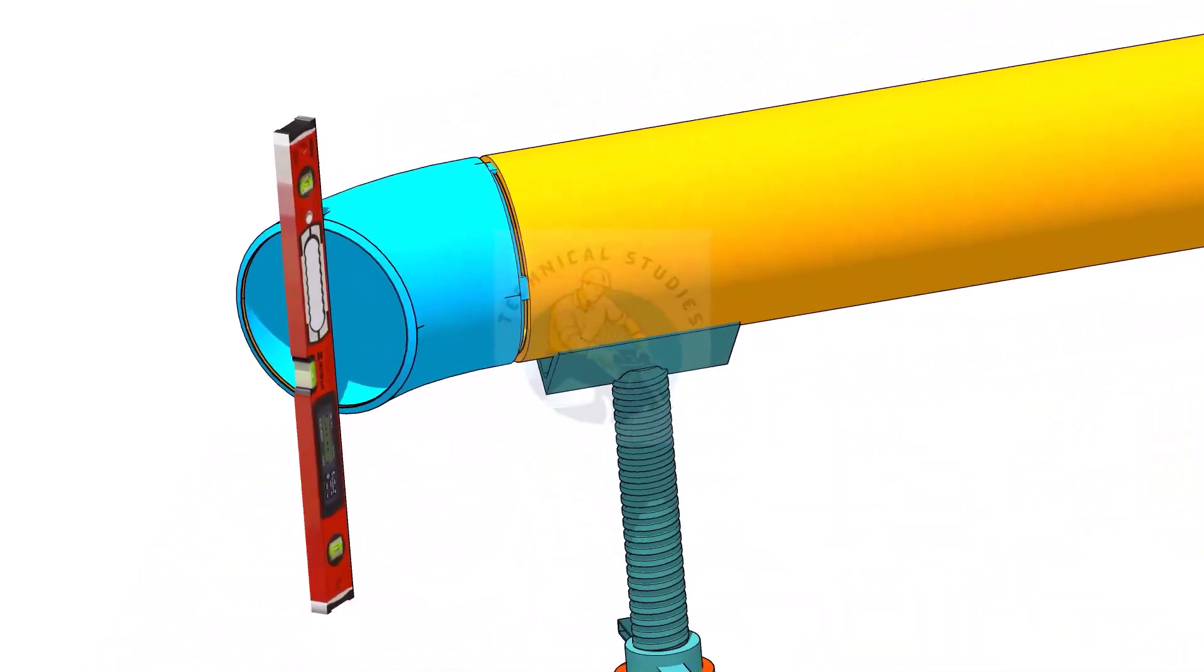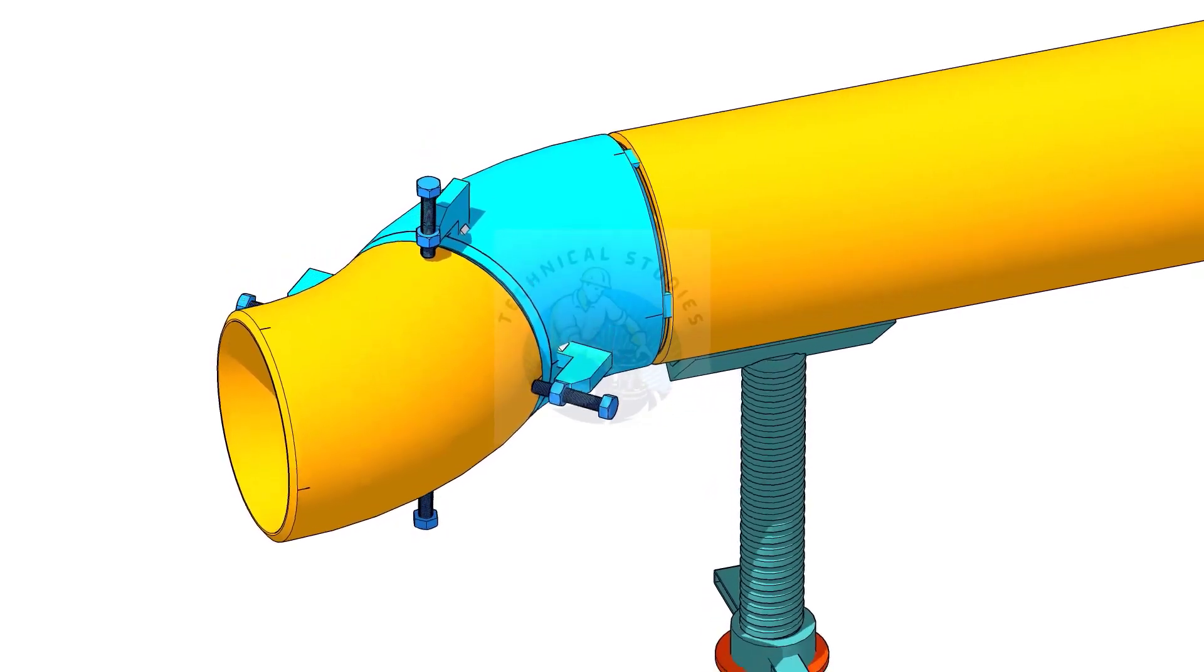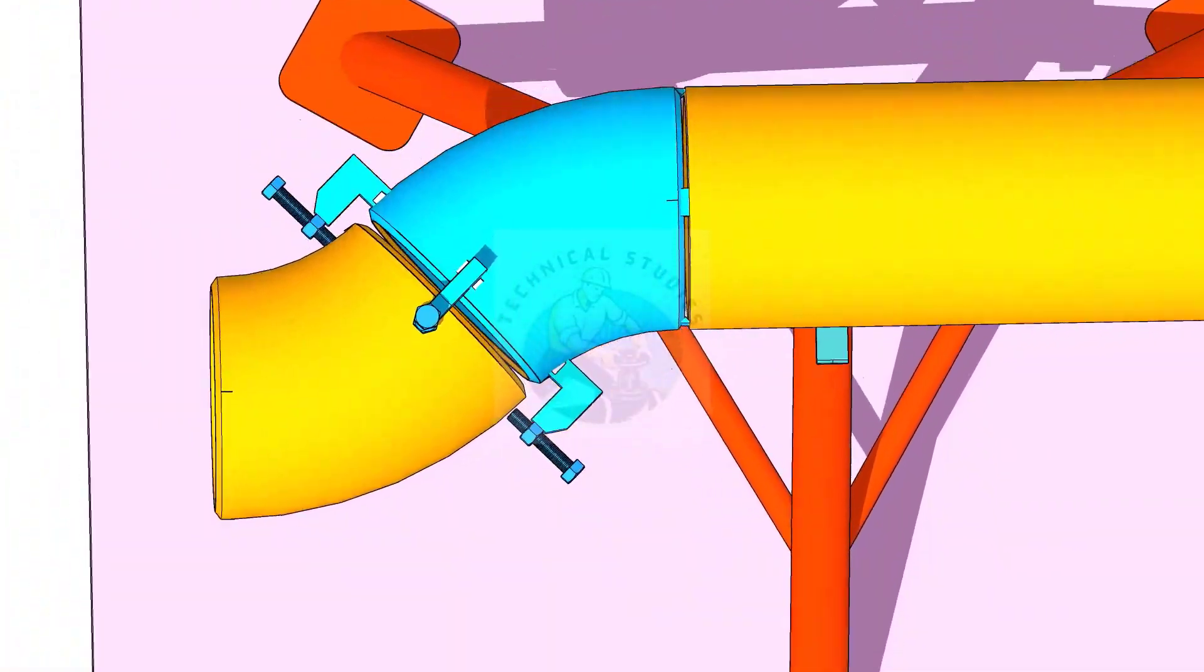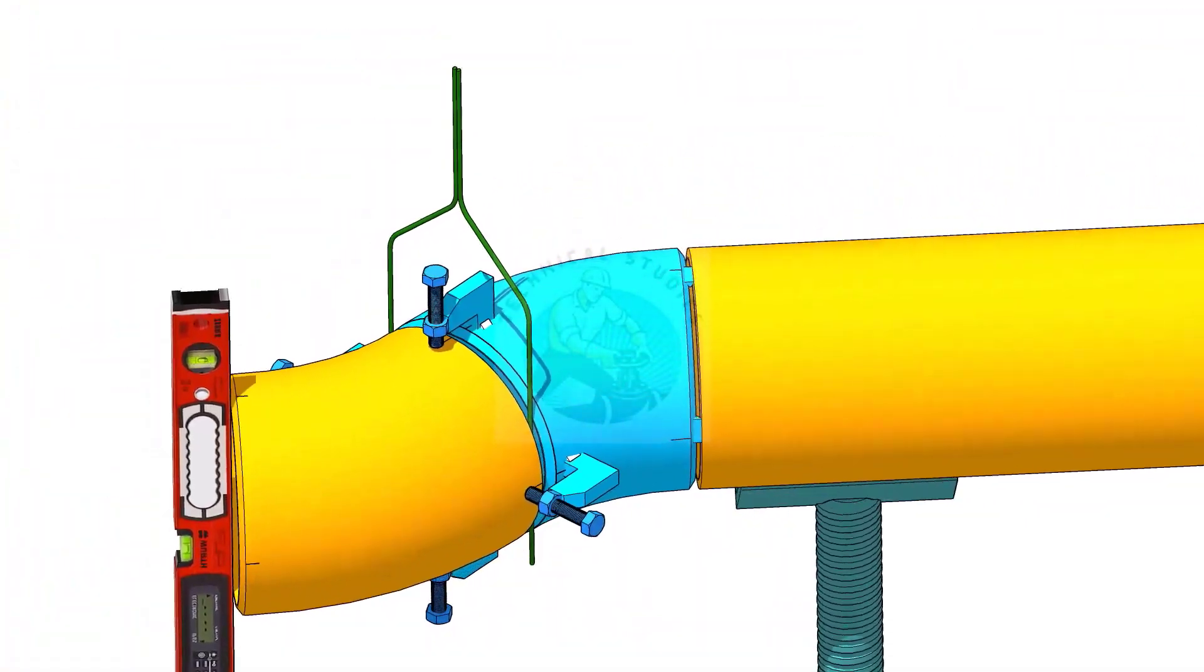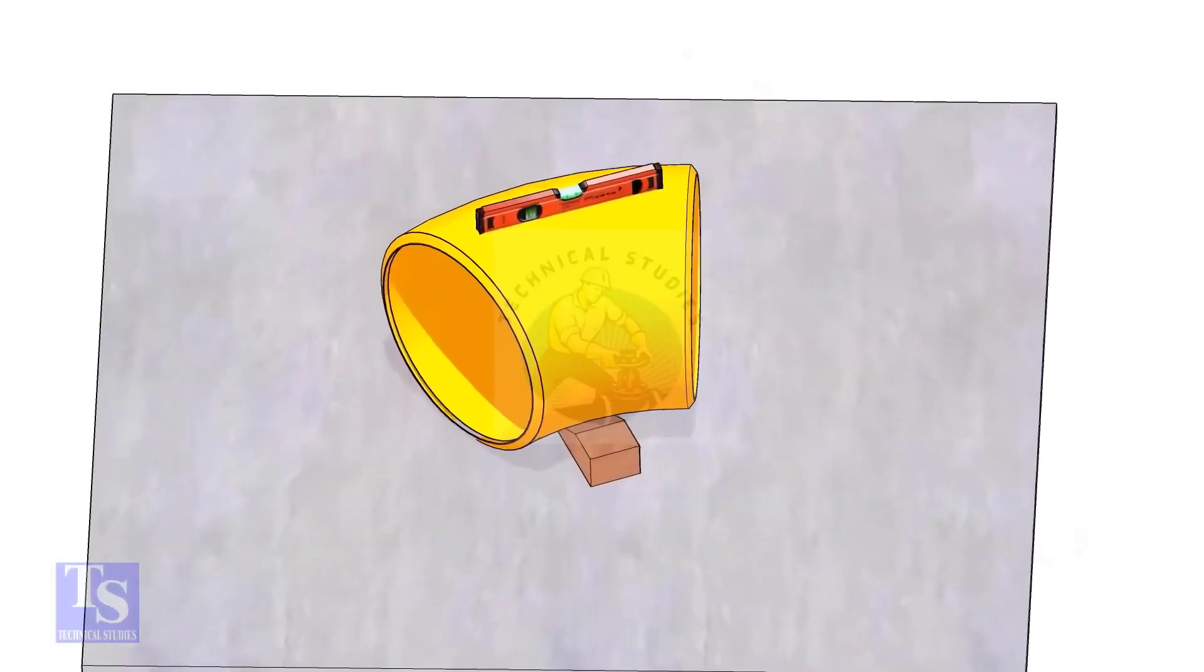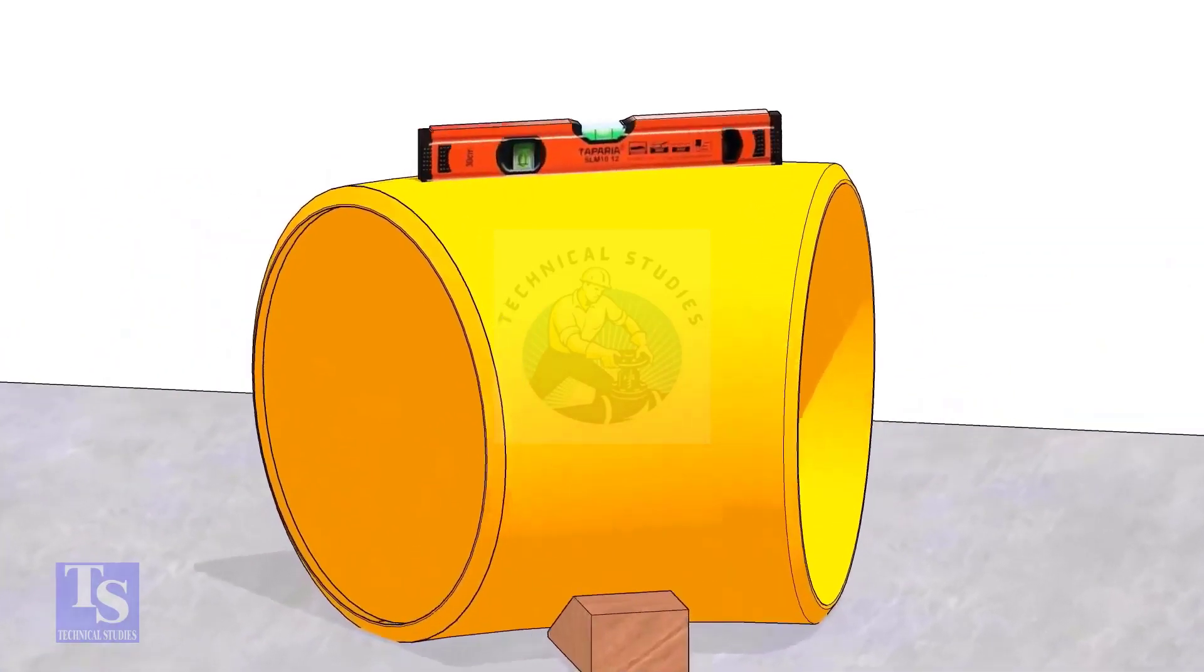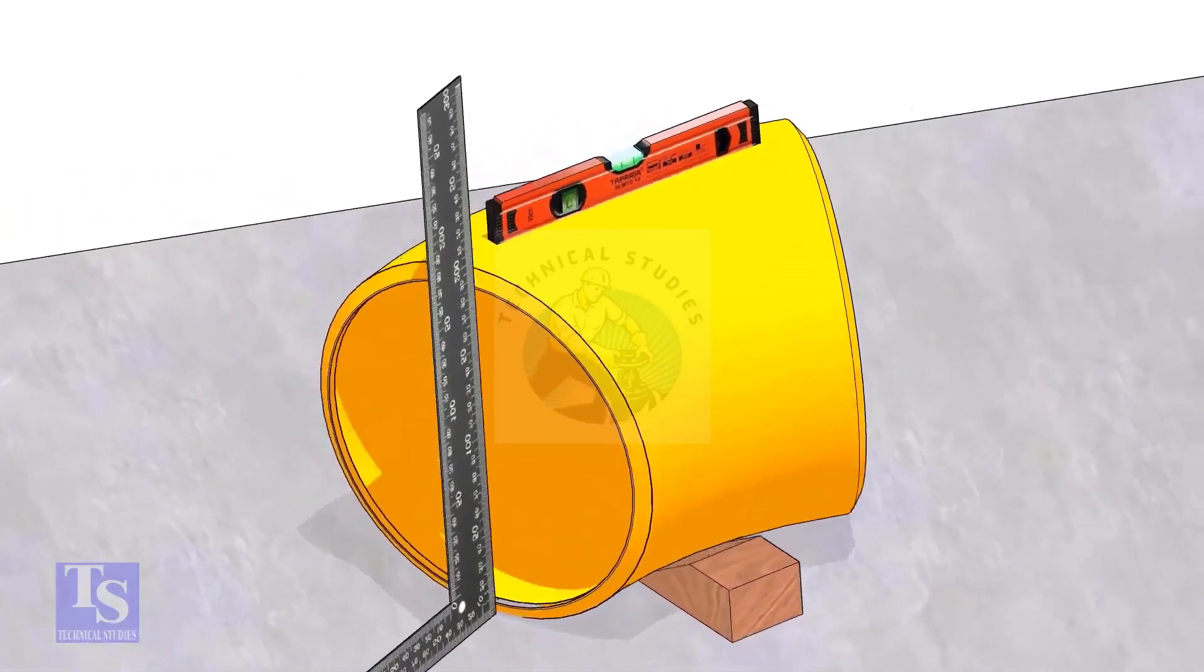Hi friends, welcome to Technical Studies. In this video we will learn how to fit up a 45-degree elbow to another 45-degree elbow. Put one elbow on a straight plate, check the top level, and make the faces of the elbow at a right angle to the plate.